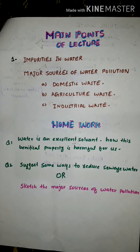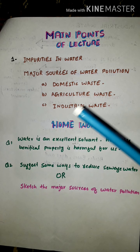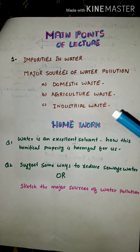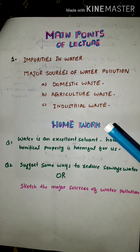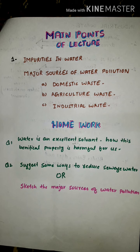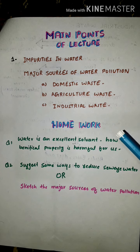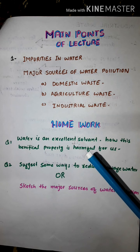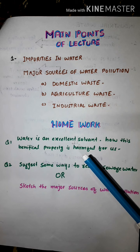Pollutants in water are dangerous for humans and animals and harmful for crops. The major sources of water pollution are: domestic waste, agricultural waste, and industrial waste. Domestic water pollution is mainly caused by sewage. Sewage is waste derived from homes, schools, and offices. It includes human waste, waste food, and detergents.